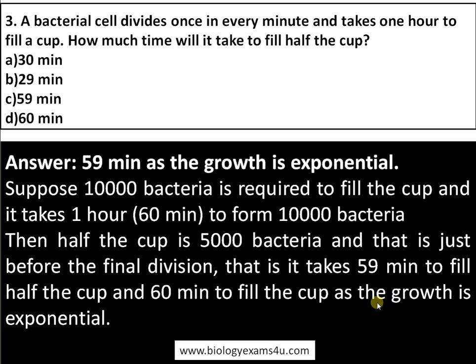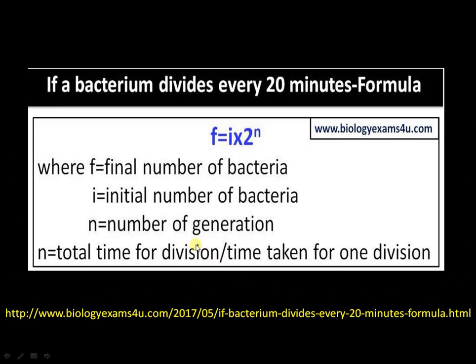Bacterial populations double each generation: 2, 4, 8, 16, 32, 64 — and so on. This exponential doubling is why the cup goes from half full to completely full in just one final division step.